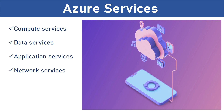Third, application services — it includes services which help us build and operate our applications, like Azure Active Directory, Service Bus for connecting distributed systems, and Azure Media Services. Fourth, network services — it helps you connect with the cloud and on-premises infrastructure, which includes Virtual Networks, Azure Content Delivery Network, and Azure Traffic Manager.